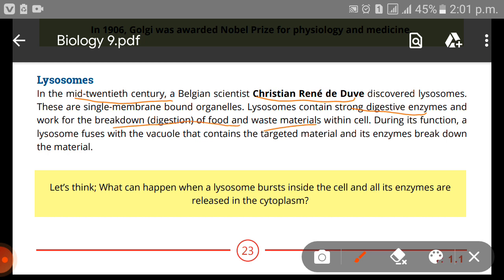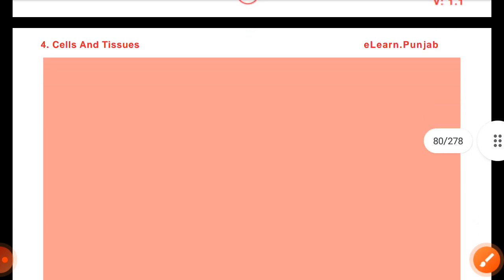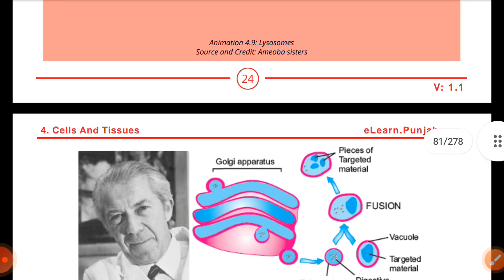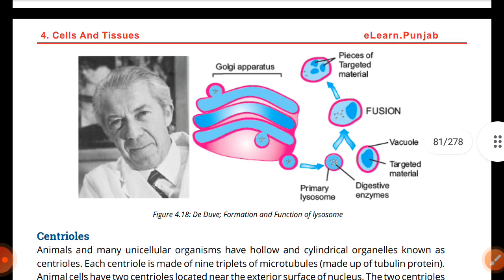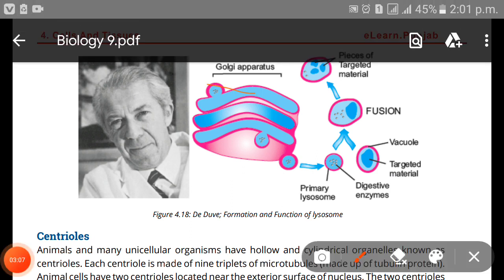During its function, a lysosome fuses with the vacuole that contains the targeted material, and its enzymes break down that material. You can see in the diagram there is a Golgi apparatus, a primary lysosome with digestive enzymes, and the targeted material that undergoes fusion, leaving pieces of the broken-down targeted material.